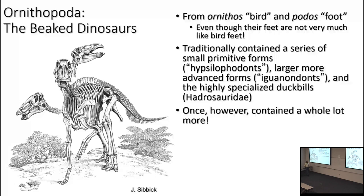Traditionally — from the 1980s onward — Ornithopoda was understood as consisting of three groups: two paraphyletic grades and one clade. These were the small primitive forms called hypsilophodonts (named after the genus Hypsilophodon), the larger more advanced iguanodonts (named after Iguanodon), and the highly specialized duckbills or hadrosaurids, which are nested inside iguanodonts, which are in turn nested inside hypsilophodonts.